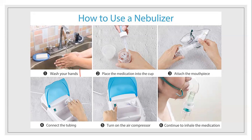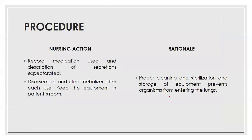Then turn on the air compressor — this switch is mainly for switching on and off the nebulization. Then connect the nebulization mask to the patient's face. By applying this mask to the patient's face, make sure that the ties are not too tight or too loose. Then record the medication used and the description of the secretions expected. Immediately after the procedure, document the medication used — mention what kind of medication was used — and document the description of the secretion.